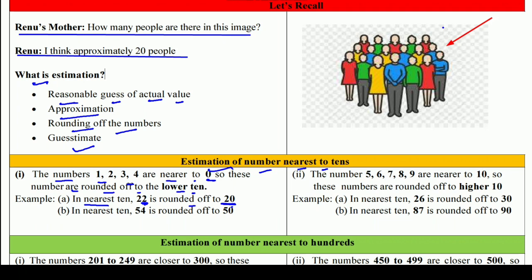दोनों चीज़ें समझें: अगर 54 है और nearest 10 में rounded off करना है, तो unit place देखा — 4, five से कम है, तो 50 पर। And in nearest ten, 87 is rounded off to 90 — क्योंकि unit place 7 है जो five से ज़्यादा है, तो next वाले 10 यानि 90 पर। इस तरीके से rounding off या estimation लगाते हैं।